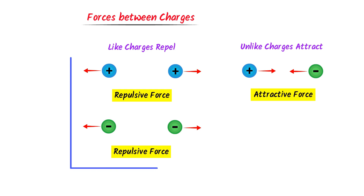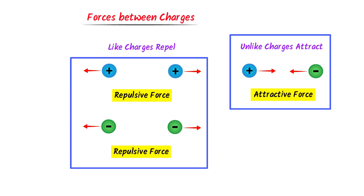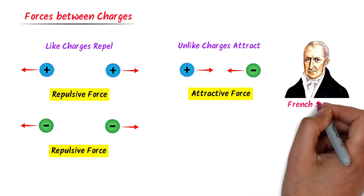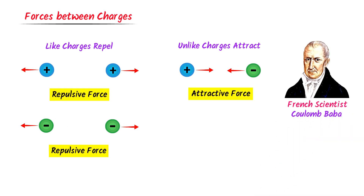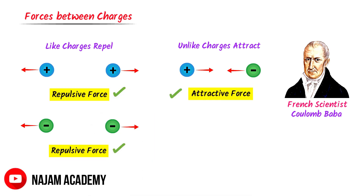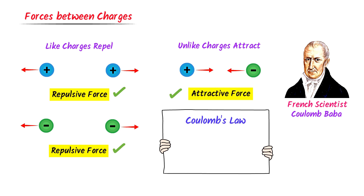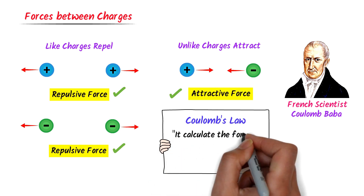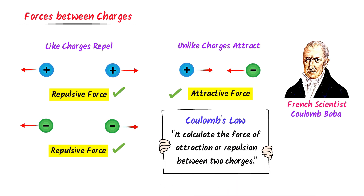Now here comes the most important question: how much repulsive force exists between two charges, or how much attractive force exists between two charges — how can you calculate it? It was French scientist Coulomb who successfully calculated this repulsive force between like charges and attractive force between unlike charges. He put forward his famous law, which we call Coulomb's law. In simple words, Coulomb's law calculates the force of attraction or repulsion between two charges.